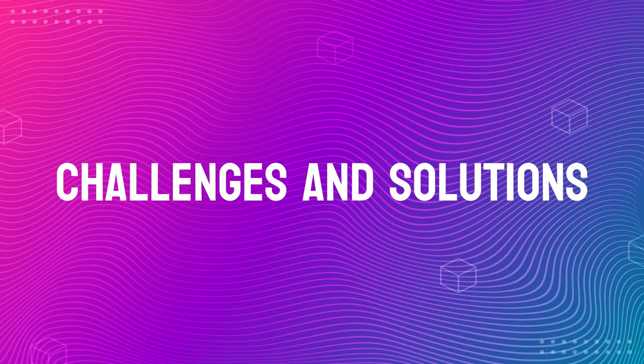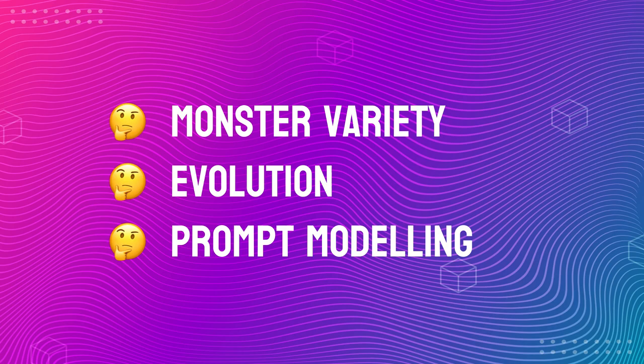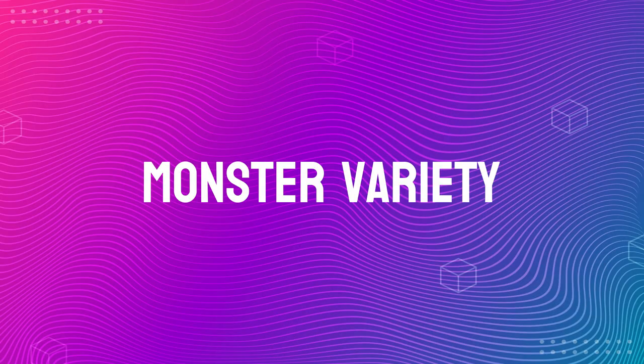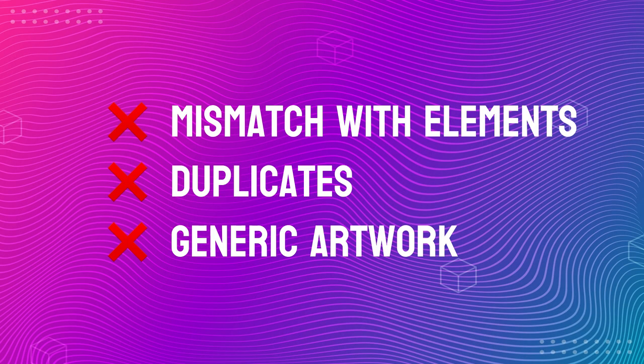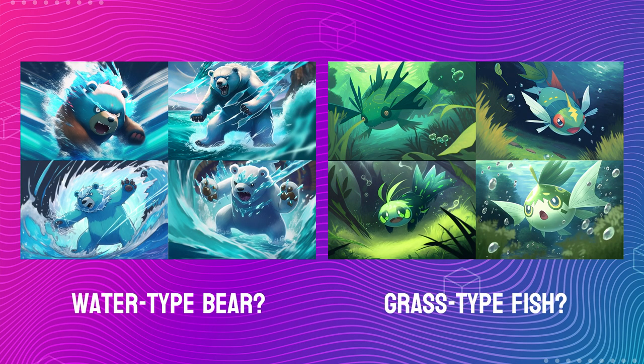Now let's look at some of the more interesting challenges I ran into. The top three most interesting challenges were: monster variety, the evolution, and prompt modeling. The first problem is monster variety. If I just pick monsters randomly from a list, I run into problems as I scale up the collection: a mismatch with elements, duplicates in my collection, and really generic artwork. A mismatch with elements is when I have a water-type bear Pokemon or a grass-type fish Pokemon — it doesn't usually give a good result.